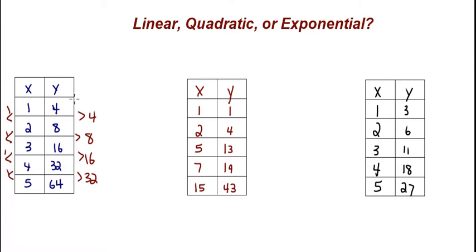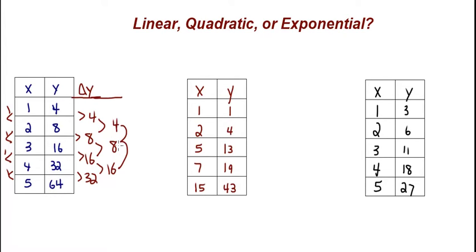Now let's see if it's quadratic. We already know the changes in y: we have a change of eight, then 16, then 32. So this is not linear. Now we're going to look at the change in the change — I'll add an extra column here called delta y. So from four to eight, we're increasing by four. From eight to 16, we're increasing by eight. From 16 to 32, we're increasing by 16. To figure out if an equation is quadratic or exponential, we look at the change in the change, or change in delta y.